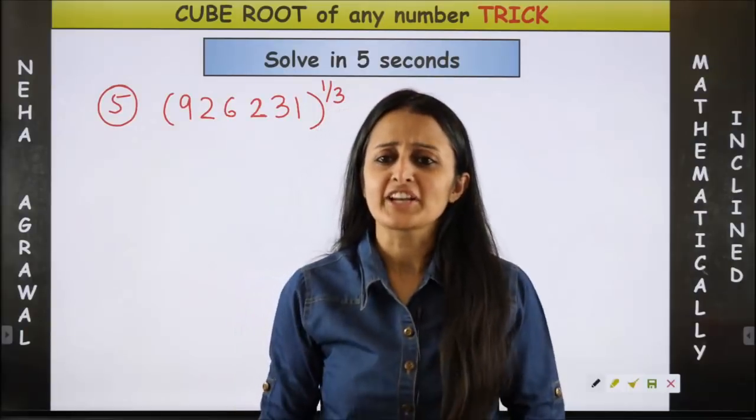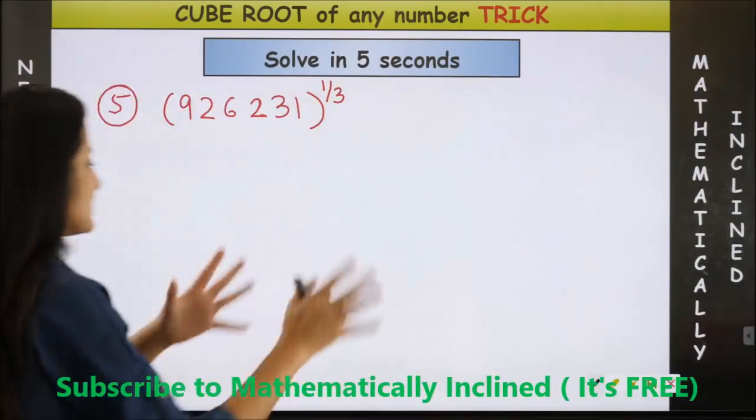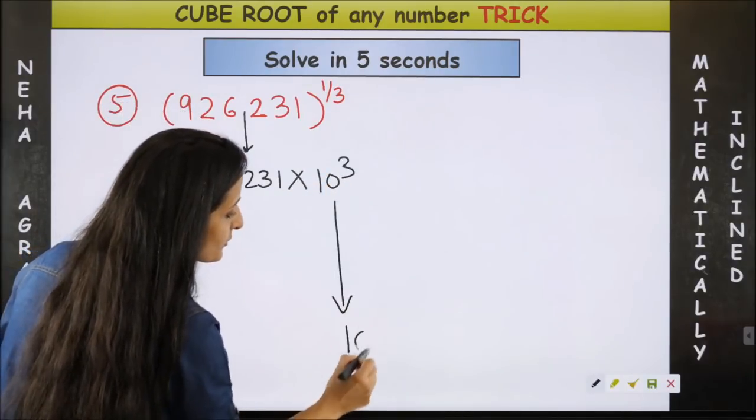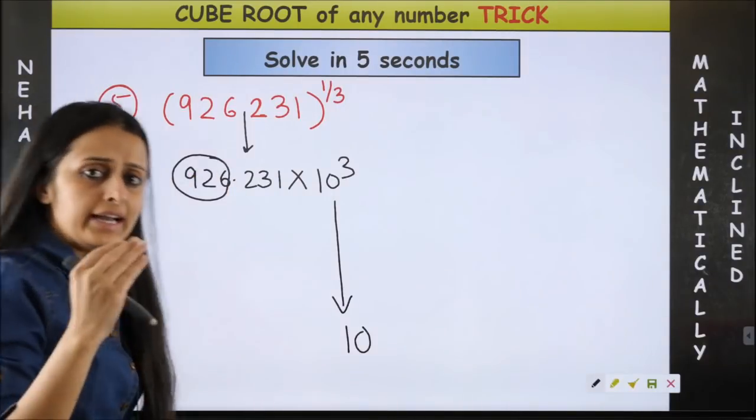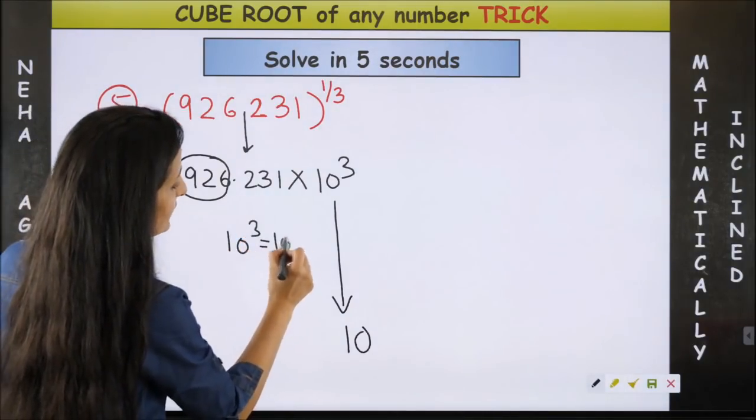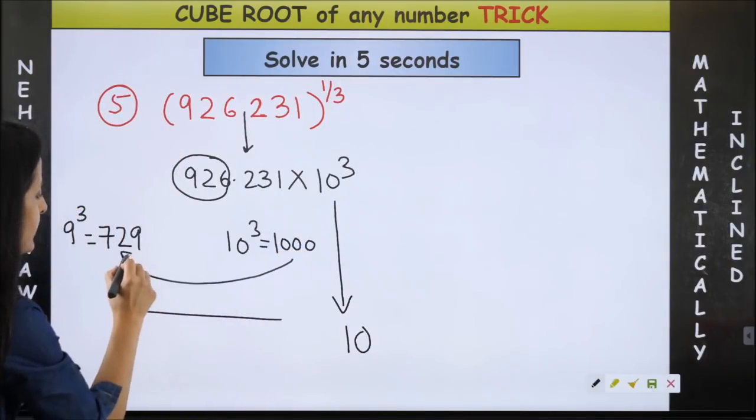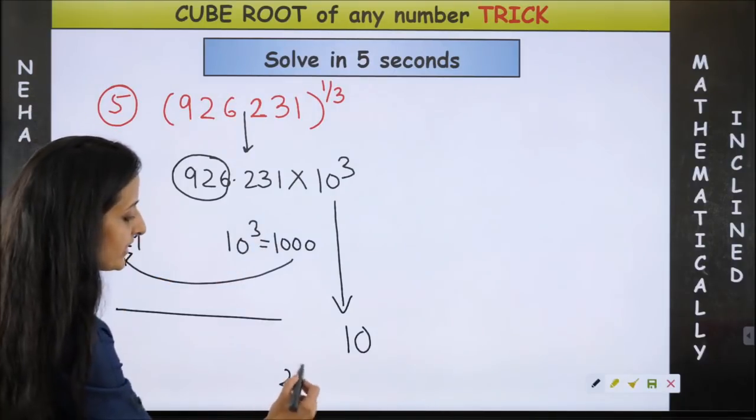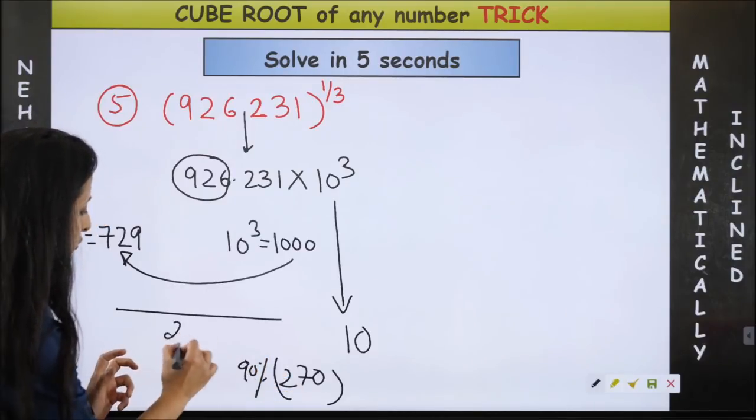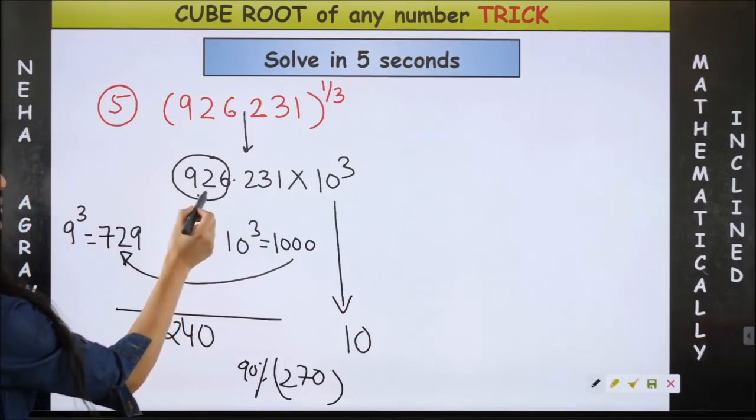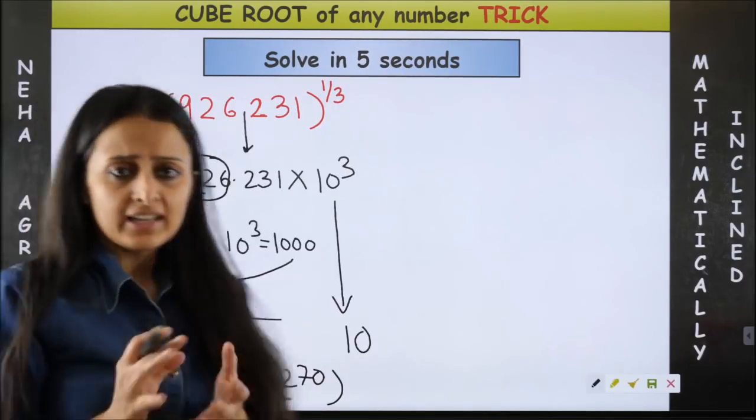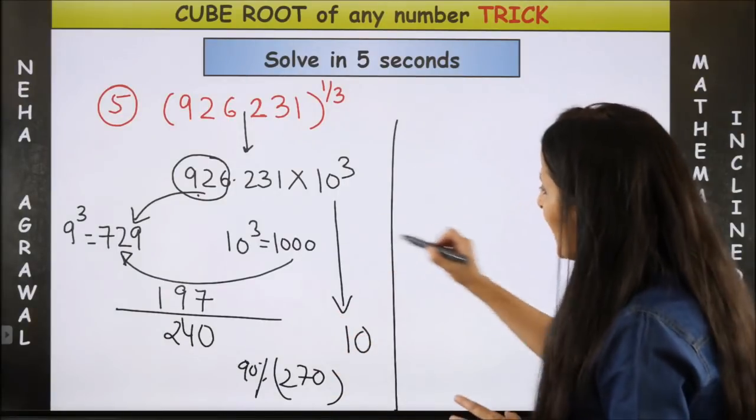Now let's check this technique one more time on a six-digit number. So the same thing: you would put a decimal here so that it becomes this into 10 cube. You are going to get something into 10. Now if you check this one out, it lies between 9 cube, which is going to give us 729, and 10 cube, which is 1000. Now 1000 minus 729 is going to be roughly 270. You have to find the 90 percent, so not to be exact, but somewhere around 240. And 926.231 minus this would give us roughly 197.